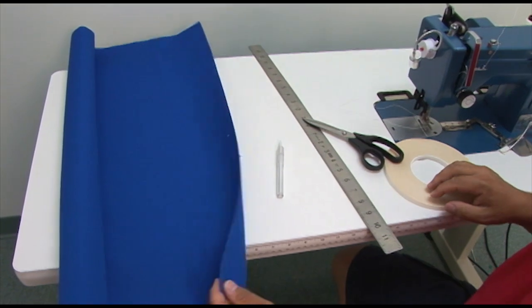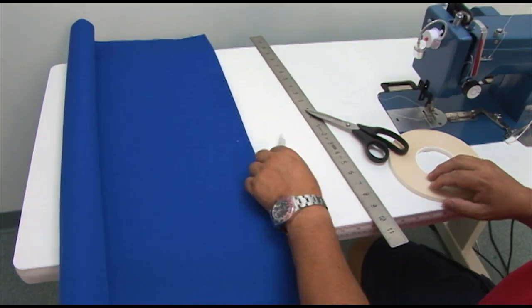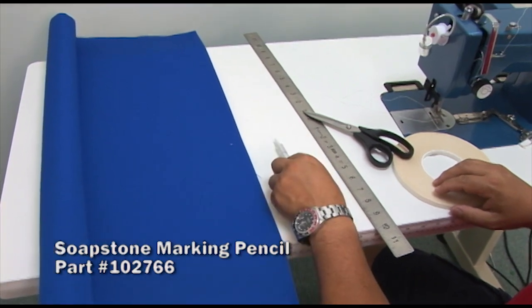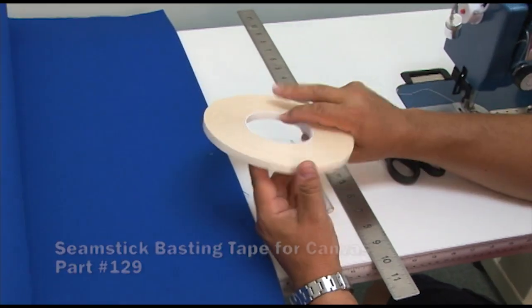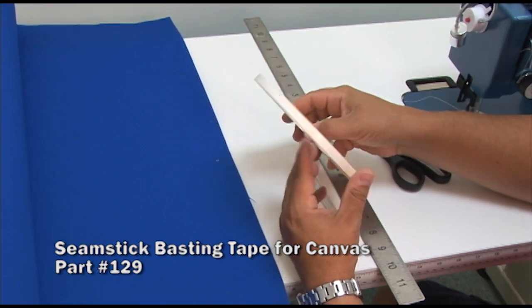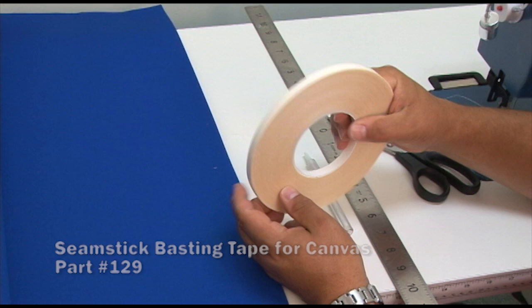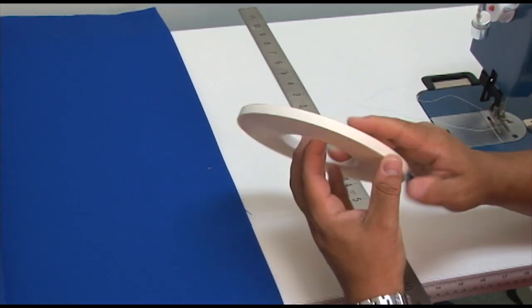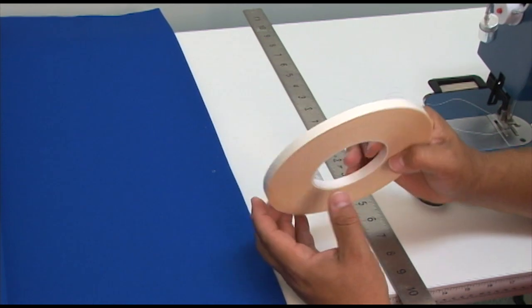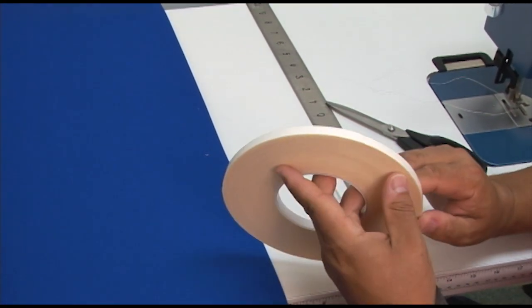This is Pacific Blue Sunbrella material, the outdoor type, and I have a soapstone pencil here for creating some marking on the fabric. And then we also have one of our staple products, something that's extremely important, so important that the part number has become infamous, which is part number 129. It's an acrylic basting tape to be used inside seams to hold seams together prior to sewing. I'll be using this in all of the demonstrations.